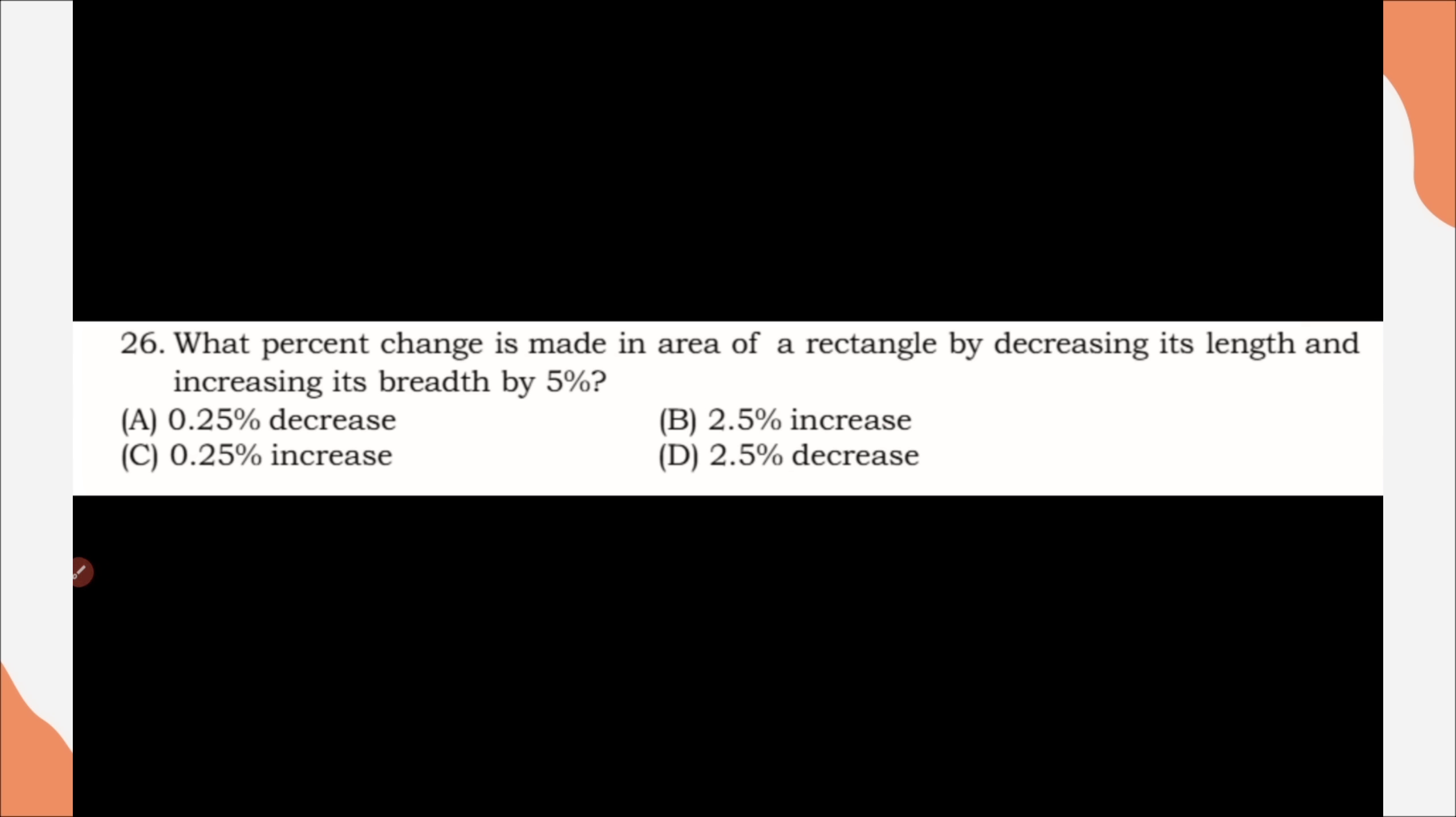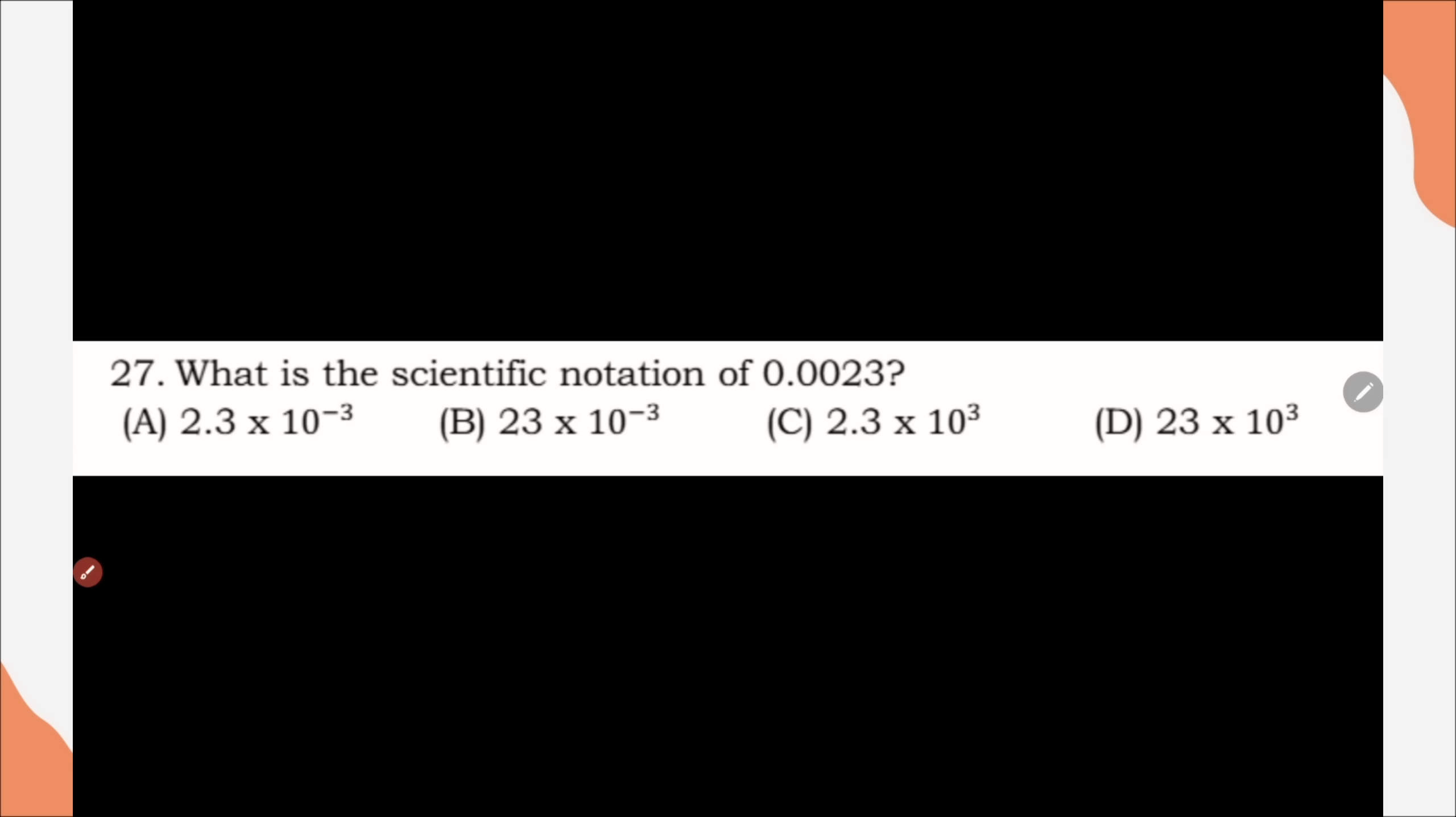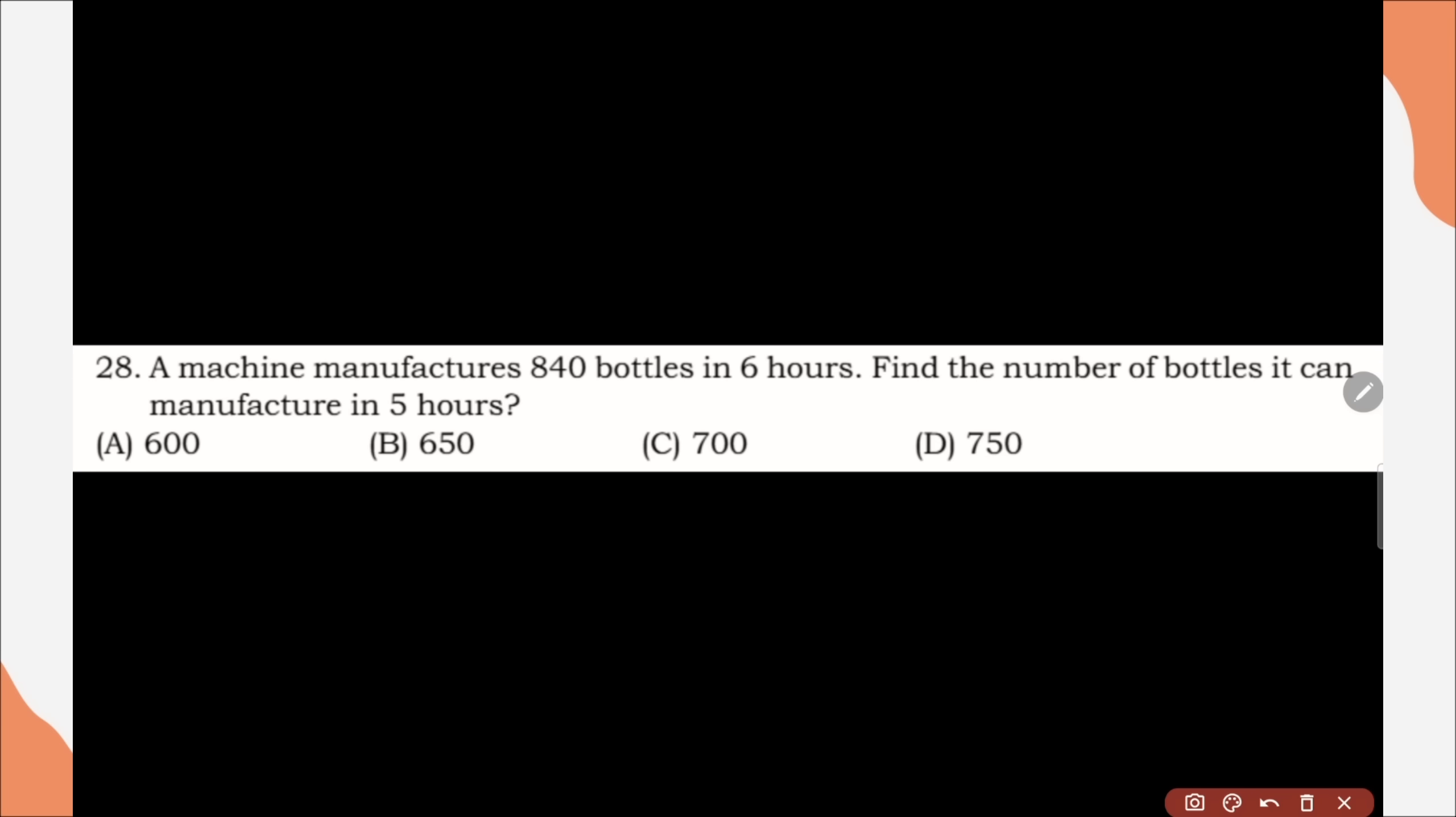Question number 26, what percentage change is made in area of rectangle by decreasing its length and increasing its breadth by 5%? Correct option is option A, 0.25% decrease. Question number 27, what is the scientific notation of 0.0023? Correct option is option A, 2.3 into 10 to the power of minus 3. Next, question number 28, a machine manufacture 840 bottles in 6 hours. Find the number of bottle that it can manufacture in 5 hours. Correct option is option C, 700 bottles.